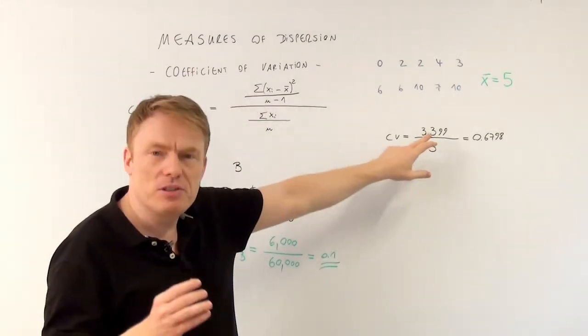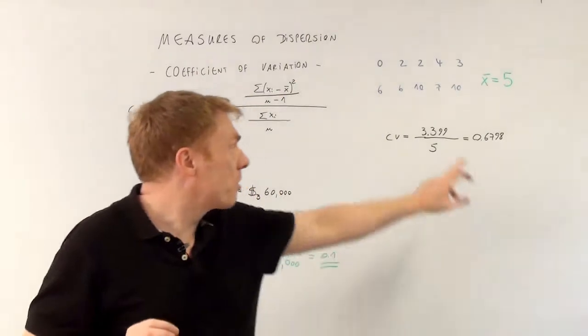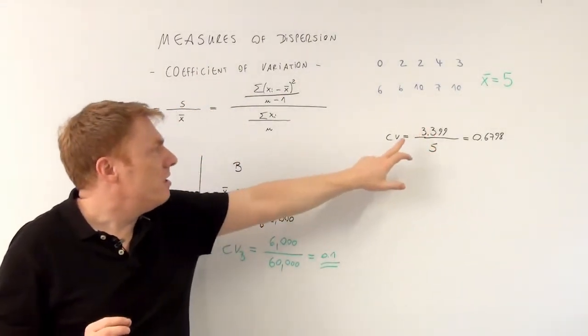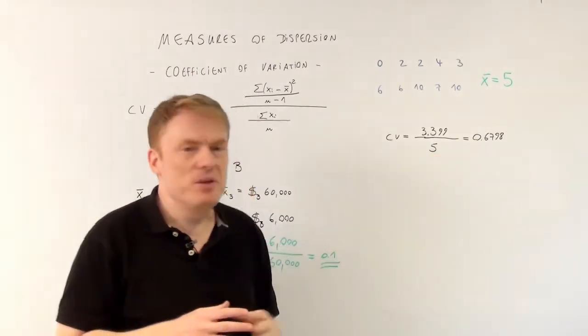So as we computed in another video, the standard deviation, the sample standard deviation was 3.399 divided by the arithmetic mean of 5 gives us 0.67.